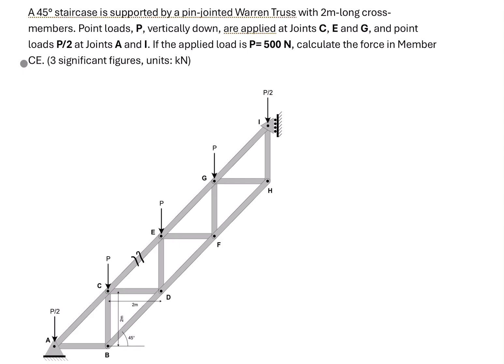The first method is the method of joints. If we do method of joints to find the member force in CE, we can either analyze joint C or joint E. But at joint C we don't know the member forces AC, CB, and CD — too many unknowns. Similarly at joint E we don't know forces EG, EF, and ED. So we cannot use the method of joints; it's too complex.